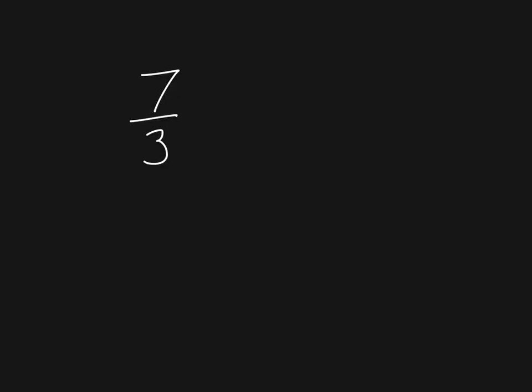We want to look at that same fraction 7/3 and think about how we can use multiplication to figure out what this would be as a mixed number. How many groups of 3/3 are in 7/3? Ask yourself what can I multiply 3 by to get a number that's close to 7 without going over? I know I can multiply 3 by 2 to get 6.